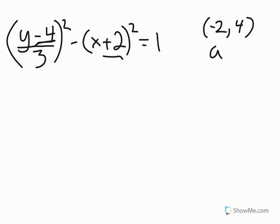Now my a value in this case is 1, because I'm not actually dividing the x by anything, and that's the same as dividing the x term by anything. So that's the same as dividing by 1, and so a equals 1. And my b term is 3, because the y term is being divided by 3.